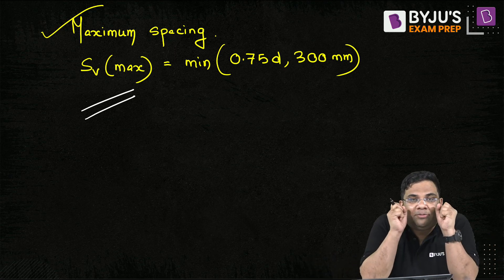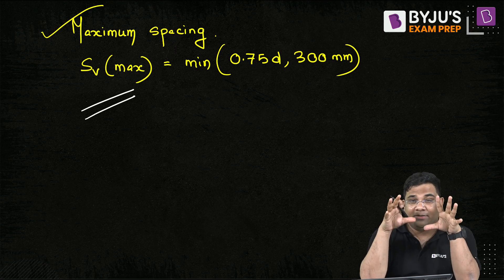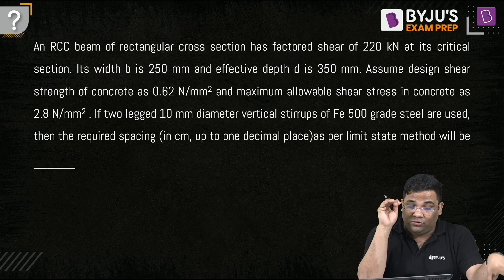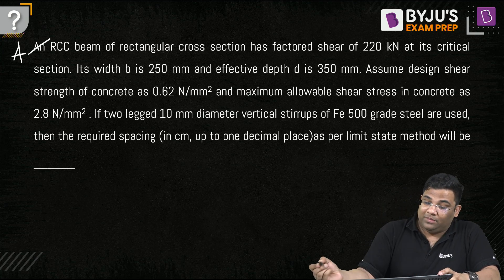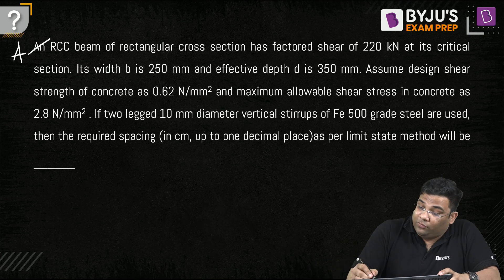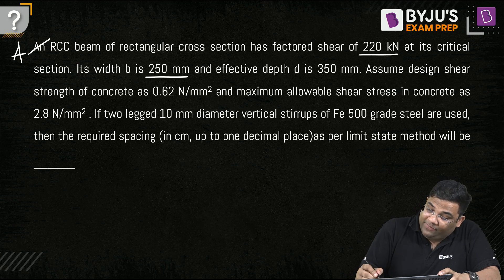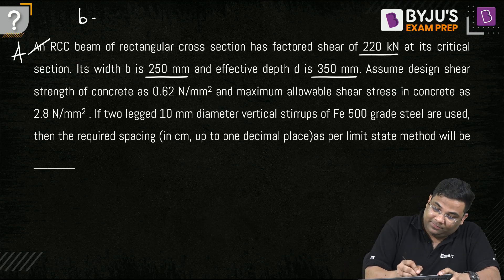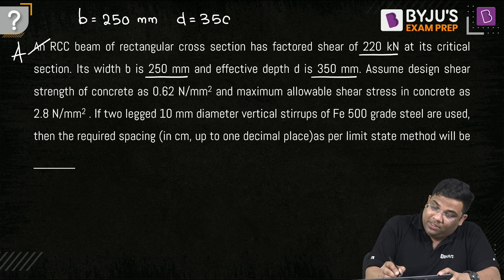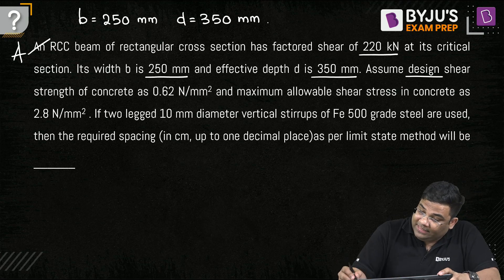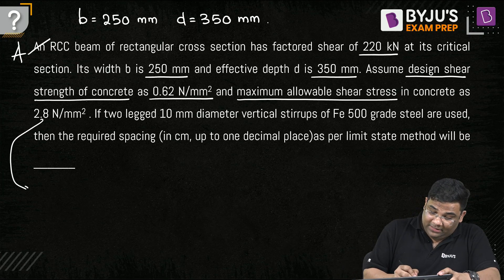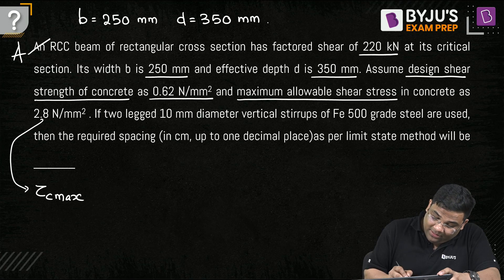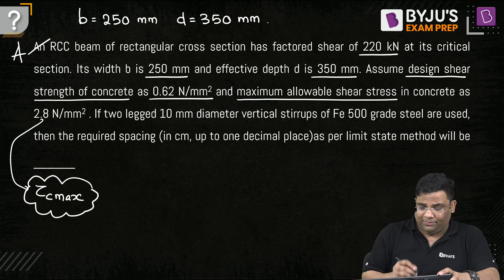Let us solve a question. An RCC beam has a cross section where the factored shear force is 220 kN, width b is 250 mm, and effective depth d is 350 mm. The design shear strength of concrete τc is 0.62 N/mm², and the maximum allowable shear stress τc,max is 2.8 N/mm².